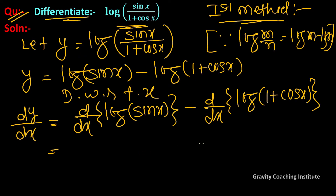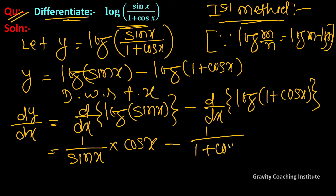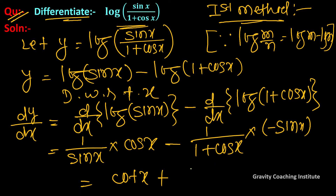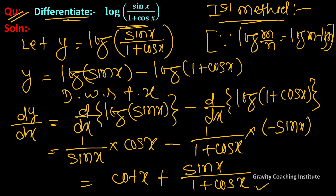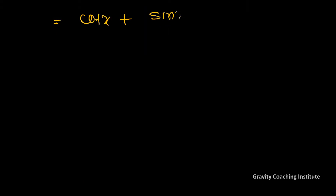For both terms we apply the chain rule using the log differentiation formula. This gives 1 upon sin x times derivative of sin x, which is cos x, minus 1 upon (1 + cos x) times derivative of (1 + cos x), which is minus sin x.